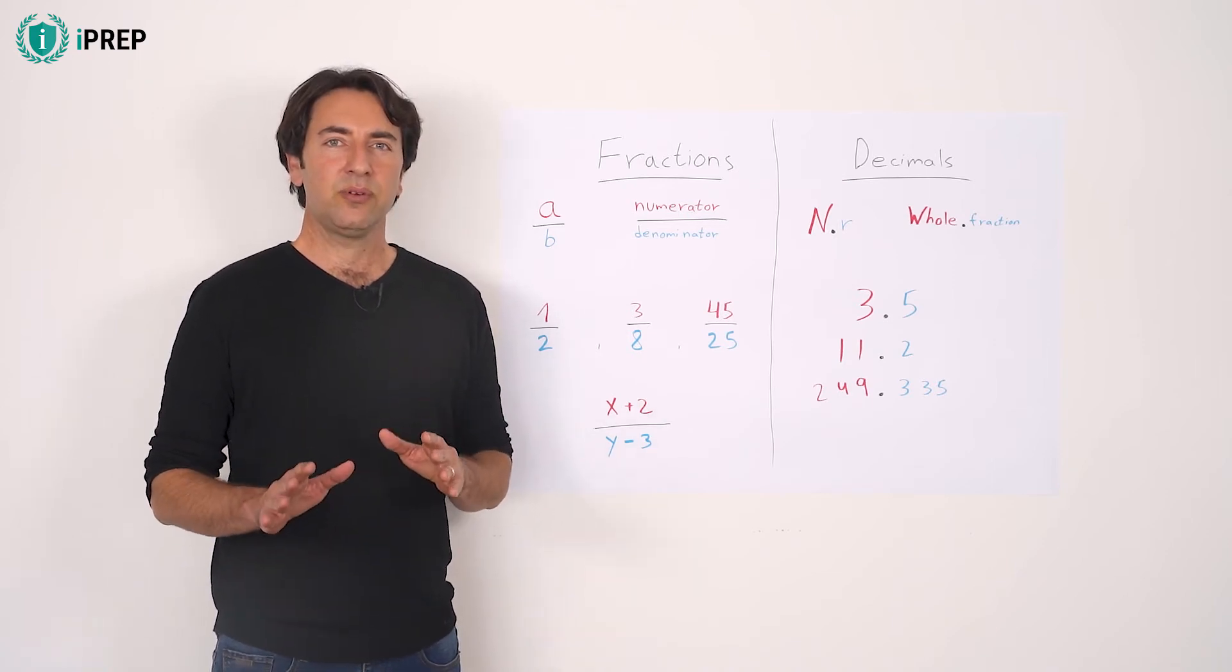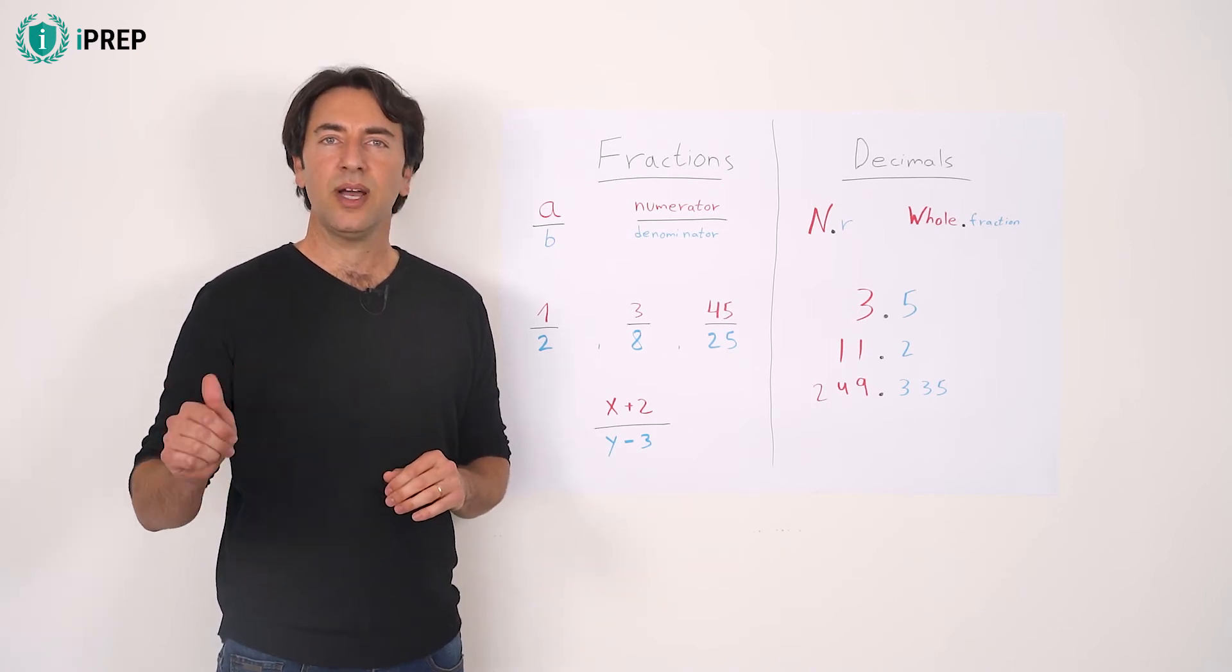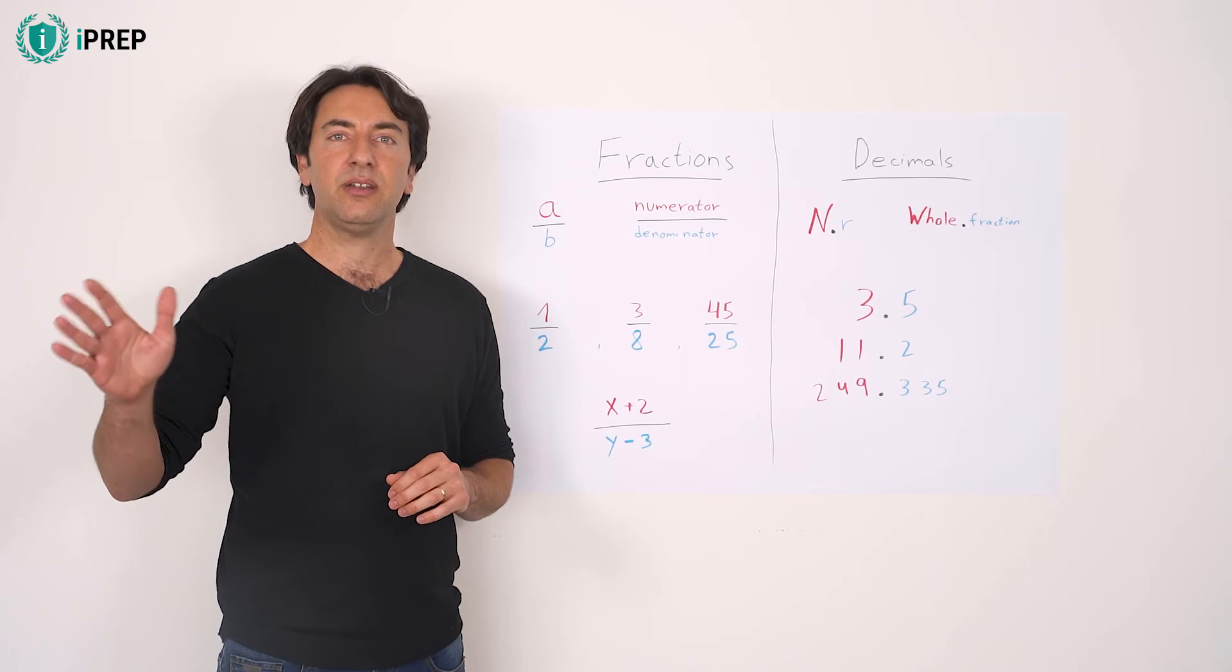In the basic form of the fraction, A and B are natural numbers. This means 1, 2, 3, 10, 100, etc.